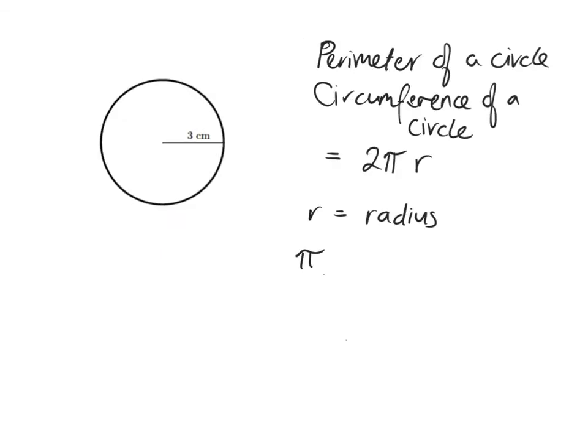The other new thing we're going to deal with is the perimeter of a circle. The perimeter of a circle is given its own special name — it's called the circumference — and it's just the idea of: if I walked all the way around the edge of the circle, how far would I have walked? Since there are no straight little bits to add up, I need to use a formula, and the formula is 2πr.